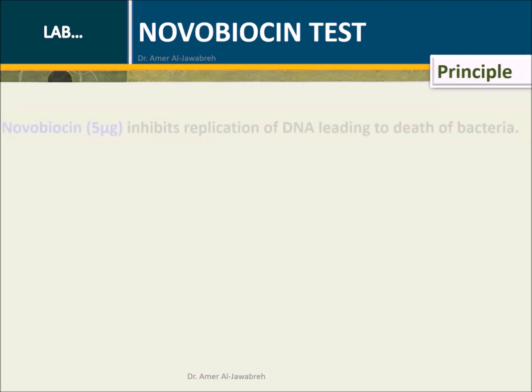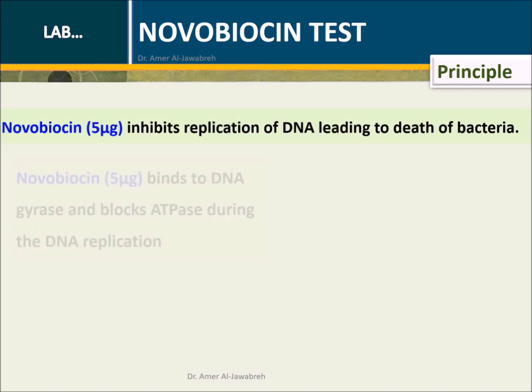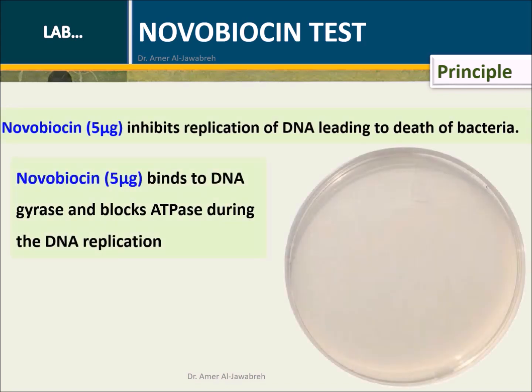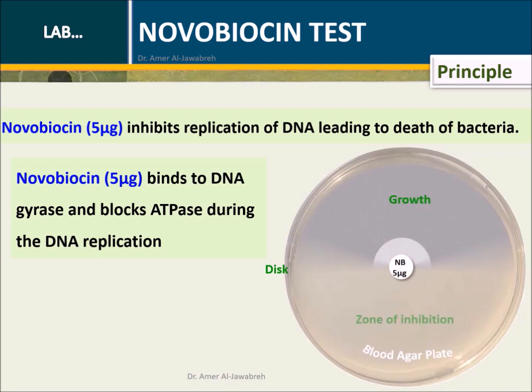Principle: Novobiocin inhibits replication of DNA, leading to death of bacteria. Novobiocin binds to DNA gyrase and blocks ATPase activity during DNA replication.